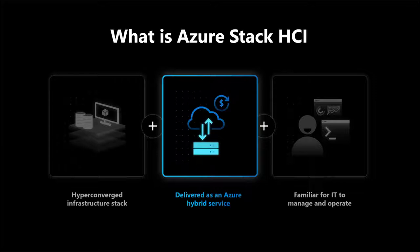Q: How many nodes do I need to stretch a cluster, and what is the minimum network speed between sites? A: The minimum for a normal Azure Stack HCI cluster is two nodes. For a stretched cluster you need two nodes on each site — a total of four — because each site behaves like a two-node cluster, allowing two-way mirroring or nested resiliency local to that site.